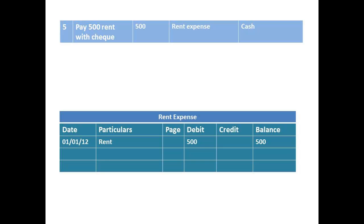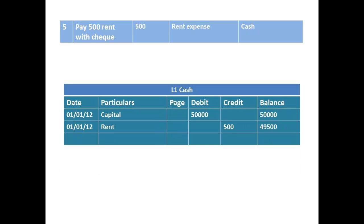Finally, the payment of rent. We debit the expense account for rent with £500, and credit the cash account. This is the second entry, so we must recalculate and record the new balance.